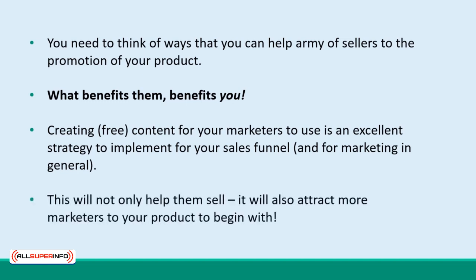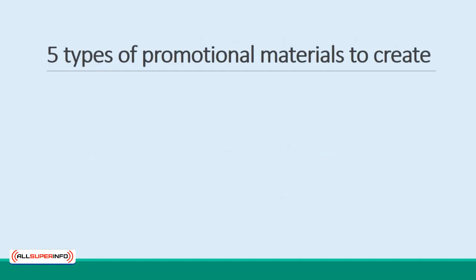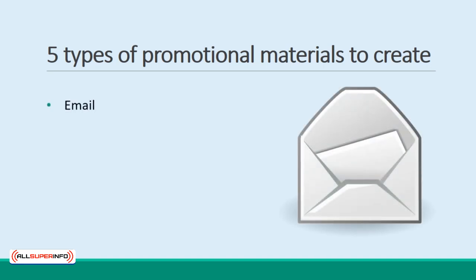This will not only help them sell, it will also attract more marketers to help your product to begin with. Here are five things you should consider creating for your marketers. Number 1: Emails. Creating a mailing list is one of the best ways to measure interest and then open a dialogue with warm leads. You can provide your marketers with a sequence of emails that will provide value and then encourage a sale.